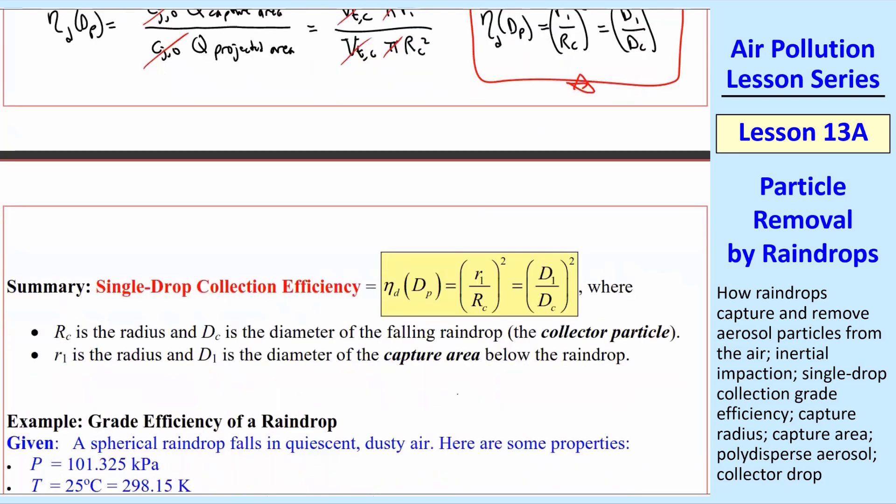In summary, single drop collection efficiency ηd of dp is given by the ratio of these radii or these diameters. RC is the radius and DC is the diameter of the falling raindrop, which is the collector. That's why there's a subscript C. And for lack of anything better, I just use a 1 here. R1 is the radius and D1 is the diameter of the capture area below the raindrop.